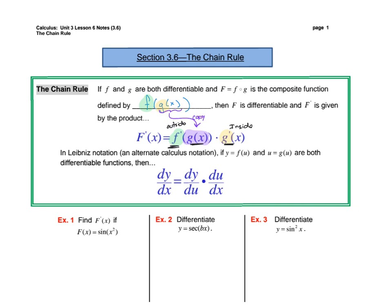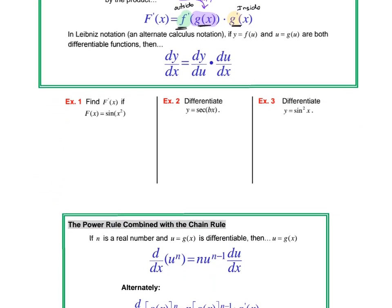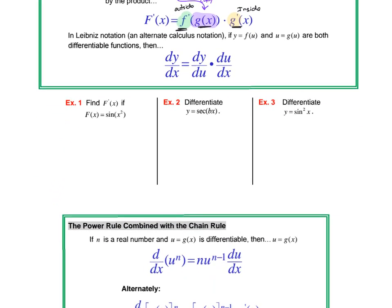Basically, this first function dy/du represents the outside function, and du/dx represents the inside function. We're going to use some trig problems to explain this notation, because I think it lays it out clearly. When you're looking at a function, you have to identify what is your inside function. In this case, x squared is inside of your sine function, which makes the sine the outside function.